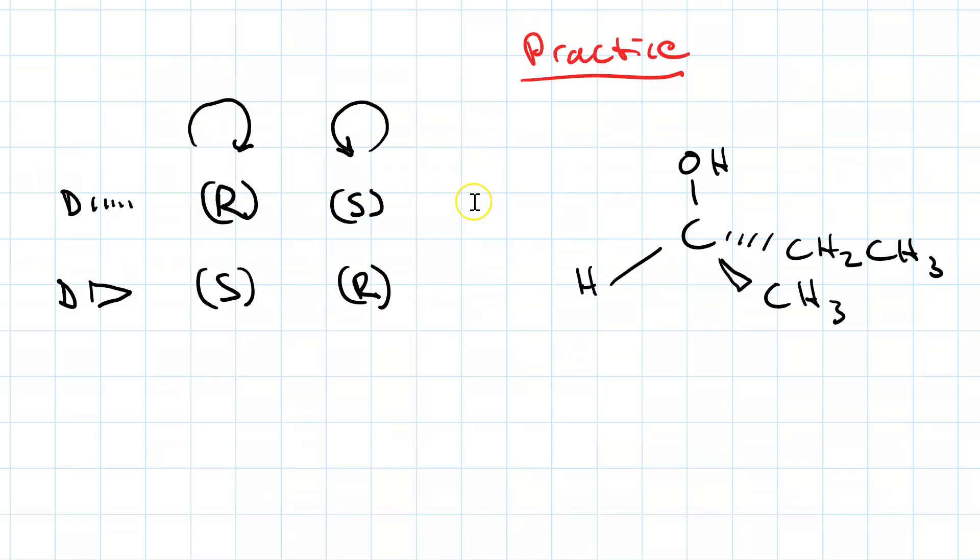Now here's a practice question for you. Can you designate this molecule as R or S? So, first you're going to have to do the rotation, then you're going to have to prioritize, and then you're going to have to do the curved arrow. Pause. Do the problem once you've got either R or S, then resume to see the answer.